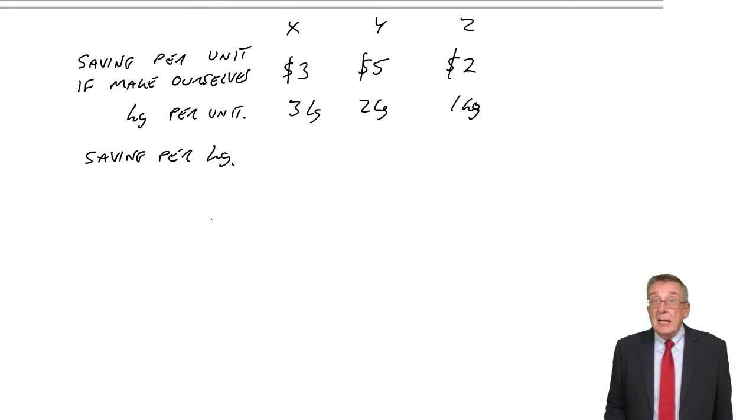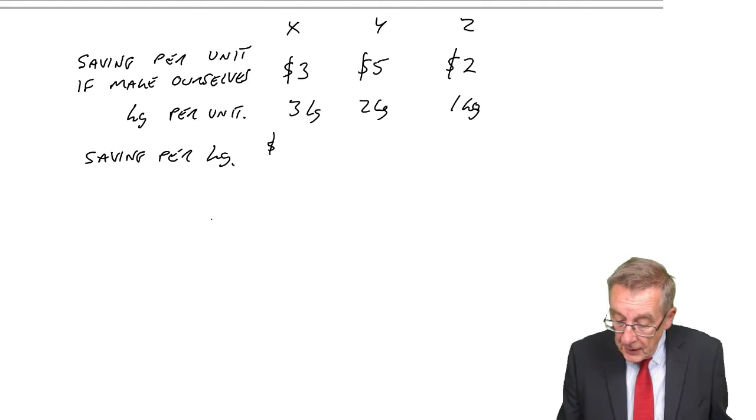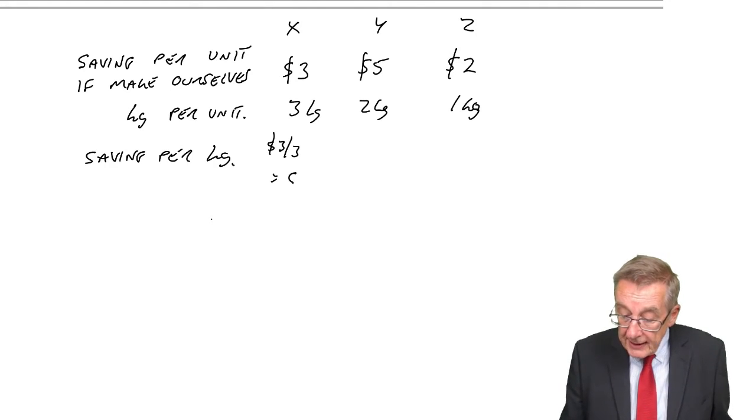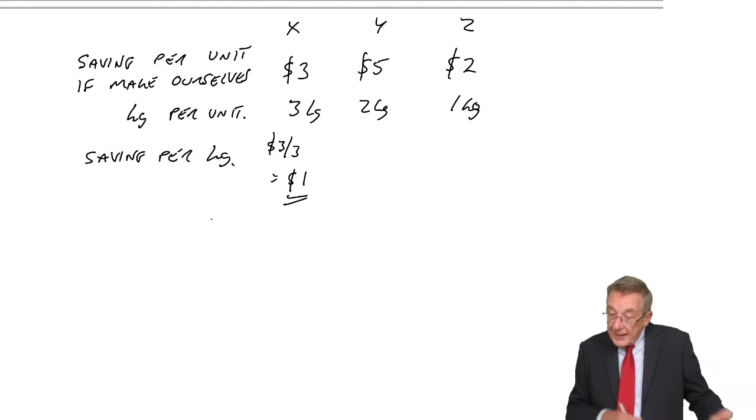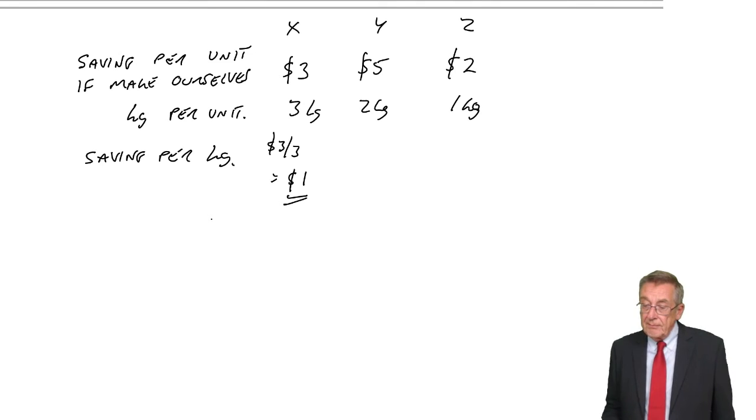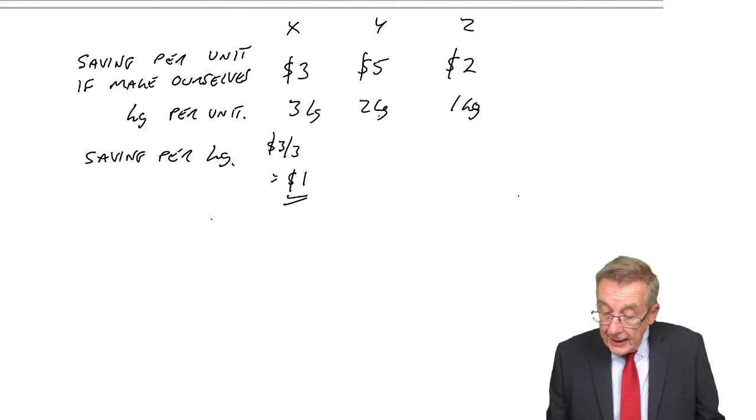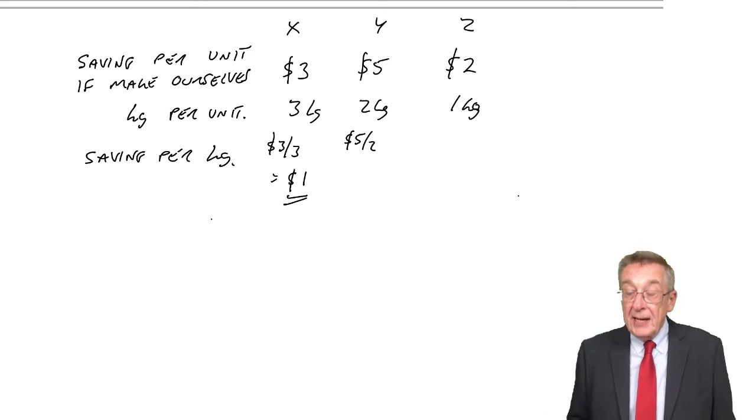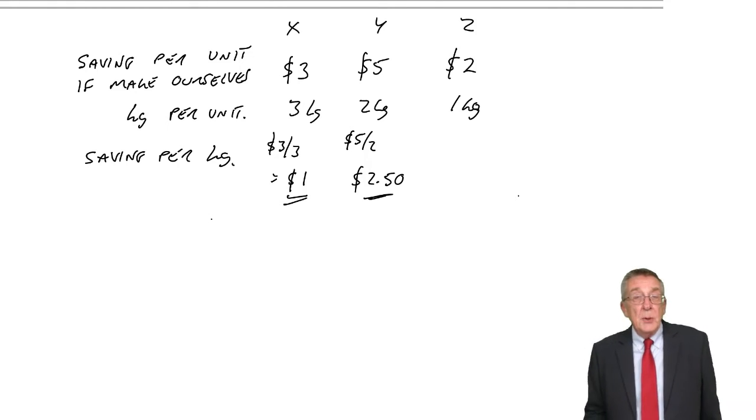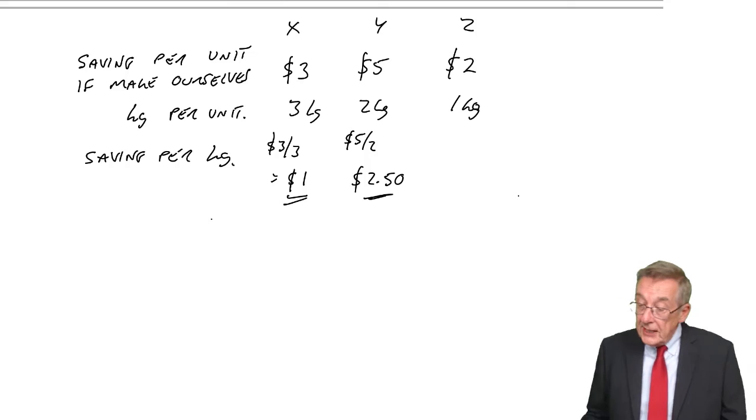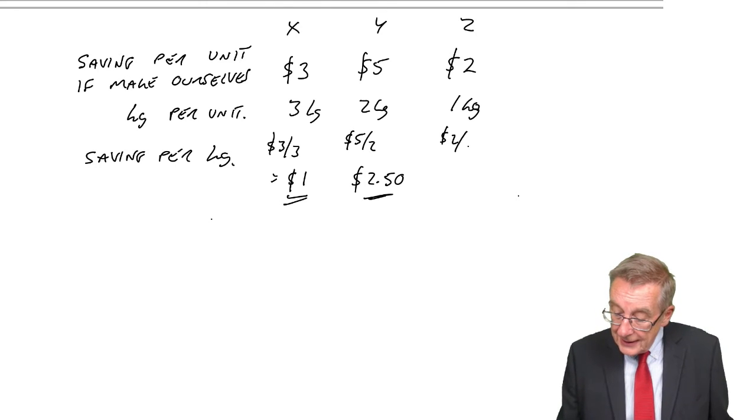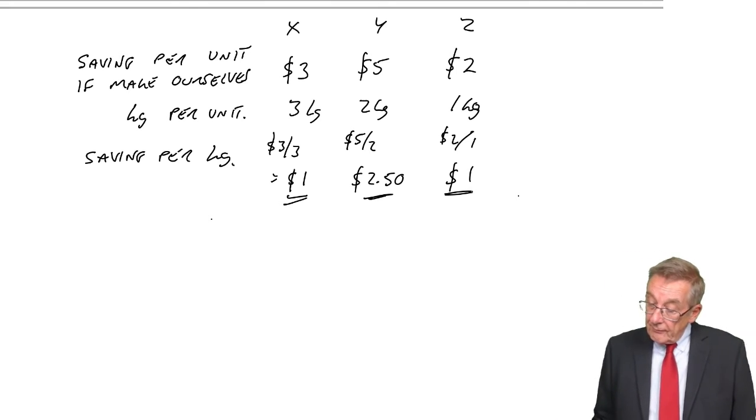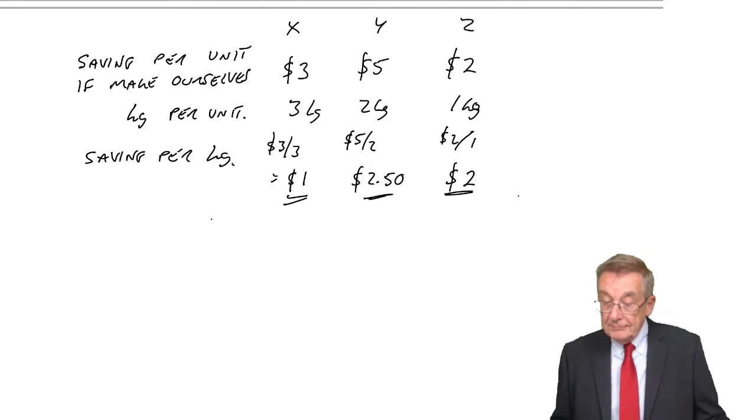X, it would need 3 kilos to save $3. And so, every kilo used to make X would save us $1, making it ourselves instead of buying outside. Y, it needs 2 kilos to make a unit, and saves us $5. So, for every kilo we use to make Y, we'd be saving $2.50, by doing it ourselves and not buying outside. Finally, Z, 1 kilo to save $2. We'd save $2.